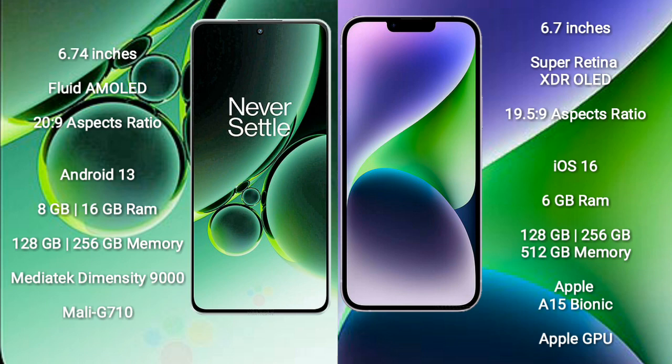OnePlus Nord 3 comes with 8GB or 12GB RAM, and 128GB or 256GB internal storage, powered by the MediaTek Dimensity 9000 processor with Mali-G710 GPU. iPhone 14 Plus comes with 6GB RAM and 128GB, 256GB, or 512GB internal storage, powered by the Apple A15 Bionic processor with Apple GPU.